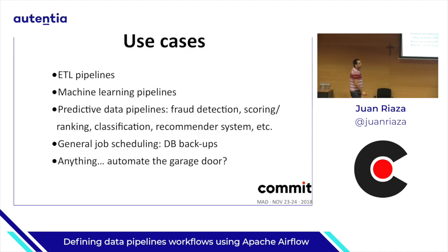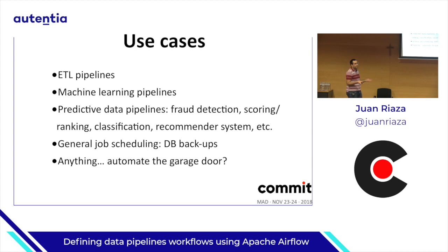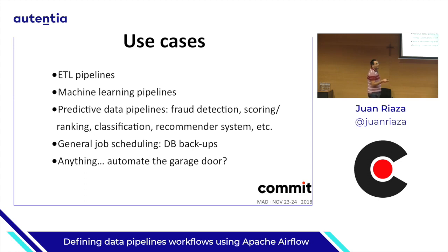Typical use cases for Apache Airflow: ETL pipelines are the most common. But also machine learning pipelines, predictive data pipelines such as fraud detection, scoring, ranking, classification, recommender systems, or just general scheduling. Even DevOps teams use Apache Airflow for tasks such as DB backups. But pretty much it could be anything — why not automate your home's garage door? It's just a workflow orchestrator, so it could be anything, not just ETLs.